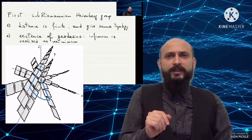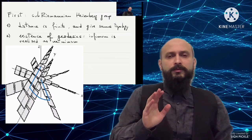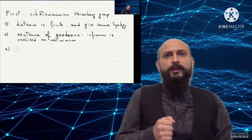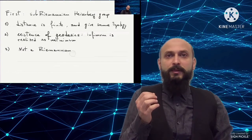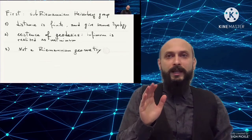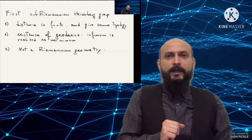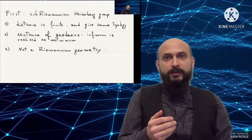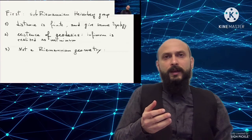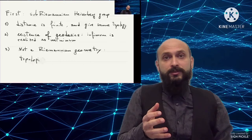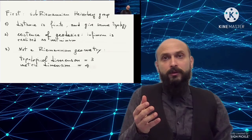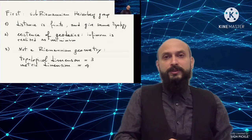Non-admissible curves should be thought of as having infinite length. Third, this geometry — this metric space — is really new, namely it is not Riemannian. It is not even bi-Lipschitz equivalent to a Riemannian space. In fact, the Heisenberg geometry resembles fractal geometry. Indeed, this metric space is topologically three-dimensional; however, from the metric point of view, it has dimension 4. More precisely, the Hausdorff dimension of the space is 4.